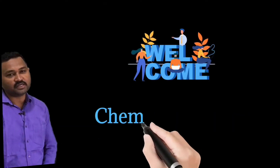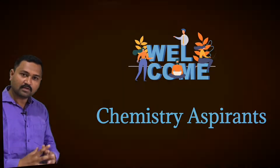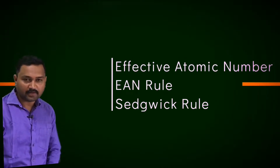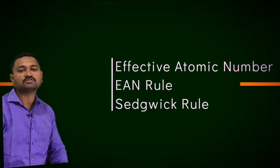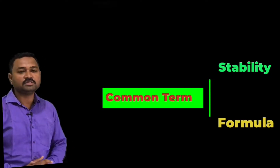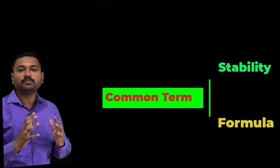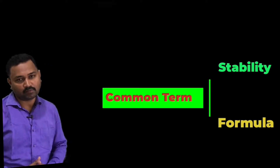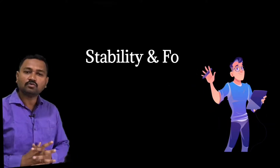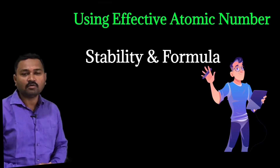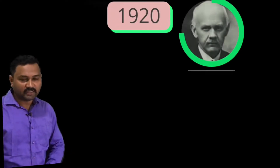Hello dear friends, welcome back to my YouTube channel Chemistry Aspirant. In today's lecture we are going to learn about the Effective Atomic Number (EAN) rule, also called Sidgwick's rule. This is a common term used in coordination chemistry to predict the stability and the formula of the coordination compound.